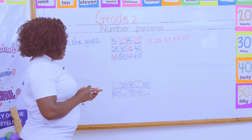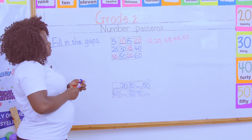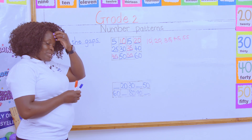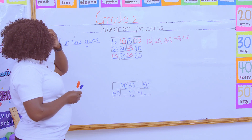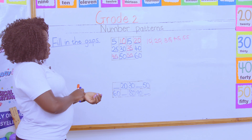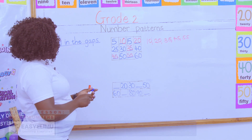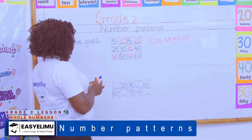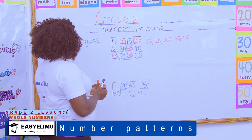Wow! Look at the next number. What can you tell me about the next number? What are we counting in? Teacher, we are counting in tens. Why? All those numbers in that box — they end with a zero.